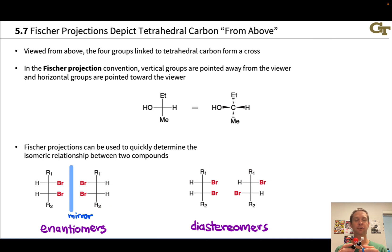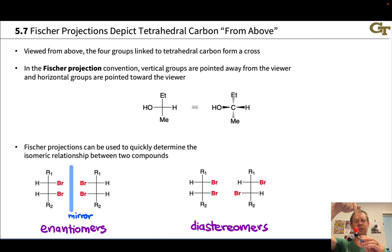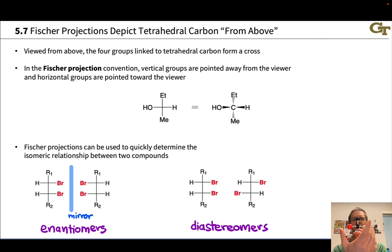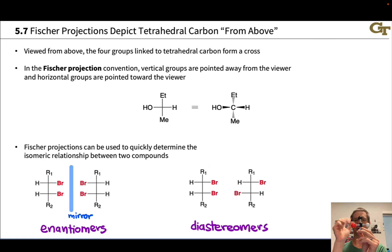The Fischer projection is based on looking down on tetrahedral carbon from above. For example, in this model, to assume the Fischer projection viewpoint we would look down from this direction, and we'd pick one of the four groups to be at the top. Typically for Fischer projections of biomolecules there's some convention about which group you put at the top. When we look down from above we see a cross, and the Fischer projection convention says the horizontal groups are going to be pointed out towards you and the vertical groups back away from you.